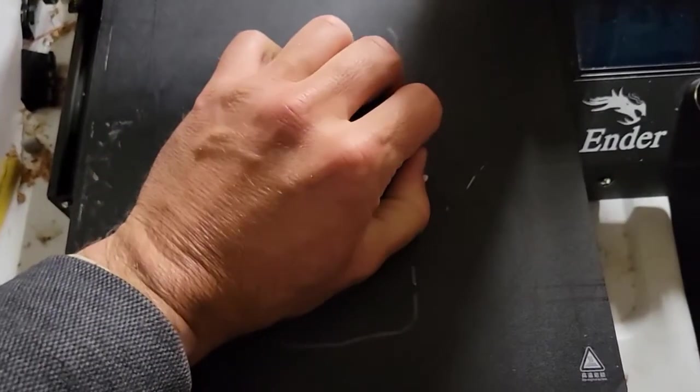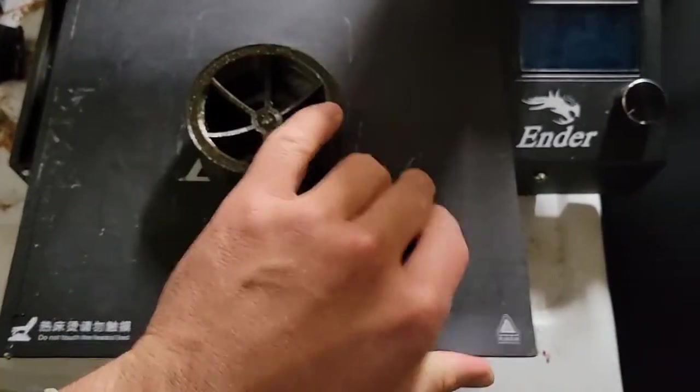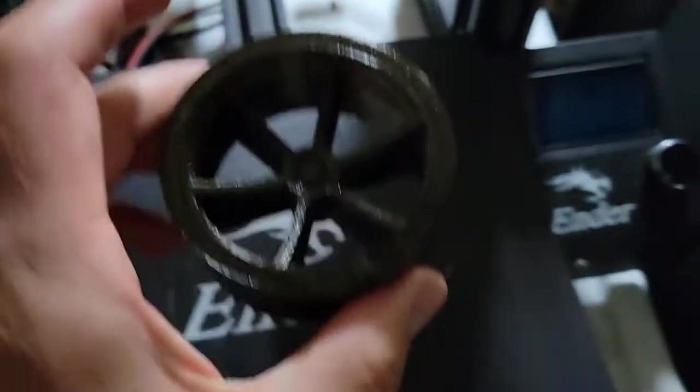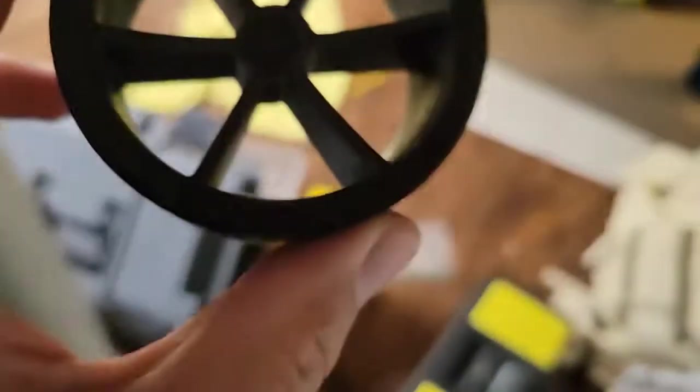Here's the finished product. Let's see if we can get it off the build plate one-handed. Oh, not quite coming off. There it goes. All right. So here we have our wheel.